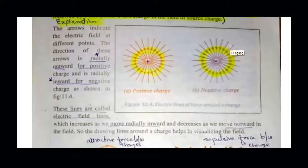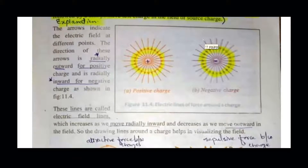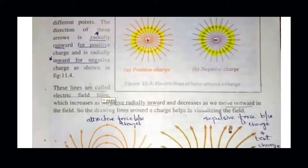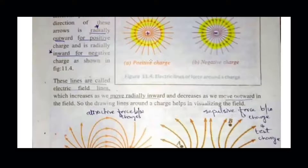For the negative charge, the arrows are pointed inward. These arrows are called electric field lines. When you are closer to the charge, the electric field lines are denser and the field is stronger. As you move farther away, the lines become more spread out and the intensity is lower.